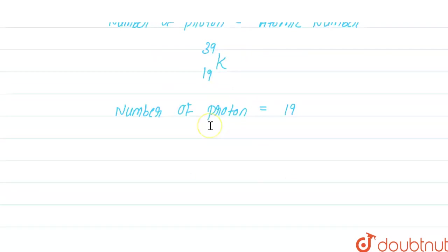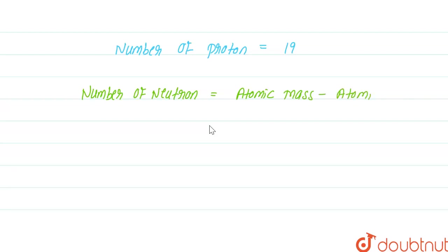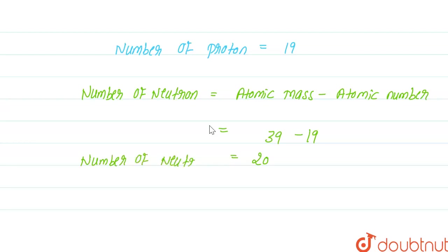For calculating the number of neutrons, the number of neutrons equals the atomic mass minus the atomic number. This is the formula for calculating the number of neutrons in any element. The atomic mass of potassium is 39 and the atomic number is 19, so 39 minus 19 equals 20. Therefore, the number of neutrons present in K-39-19 is 20.